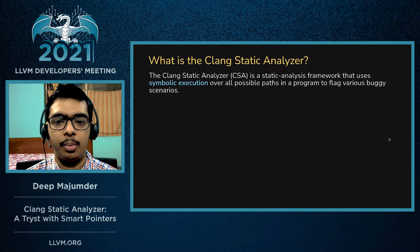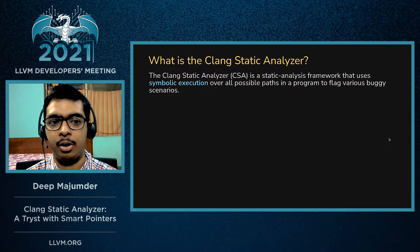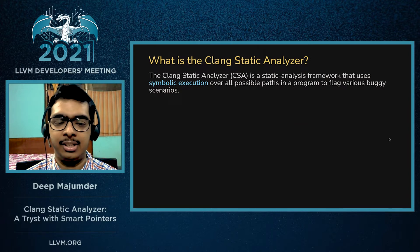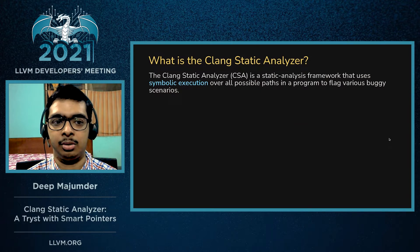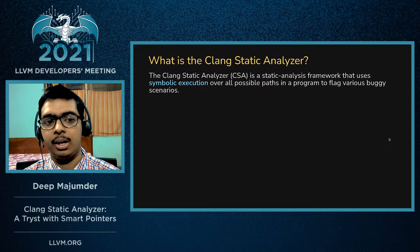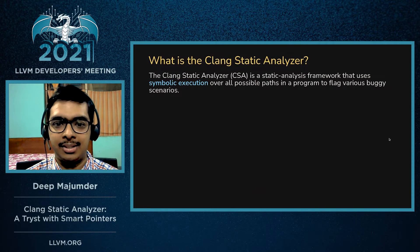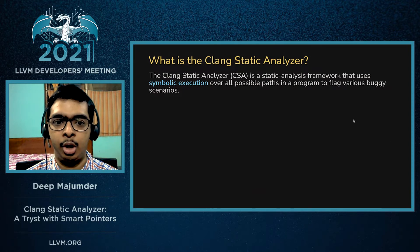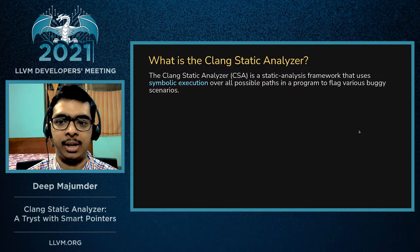Before I jump into the meat of my talk, let's recap what the Clang Static Analyzer is in case you don't know. The CSA is a static analysis framework that uses symbolic execution over all possible paths in a program to flag various buggy scenarios.